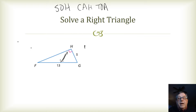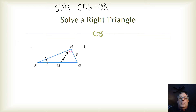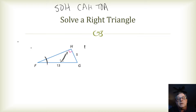Since I have two side lengths, I'm going to go ahead and find an angle measure. I could choose either G or F — I'm going to choose F. Looking at F, the side opposite F is 5 and the hypotenuse is 13, so I can use the inverse trigonometric ratio to find angle F.